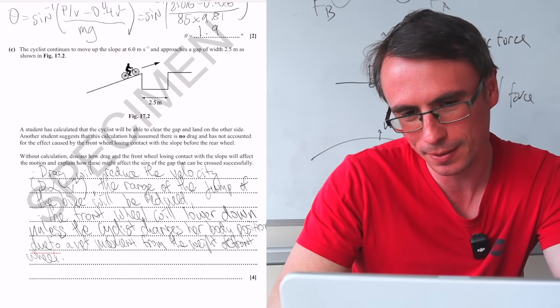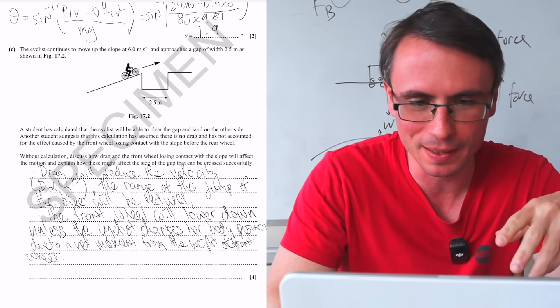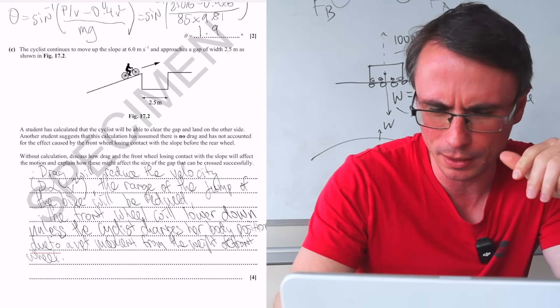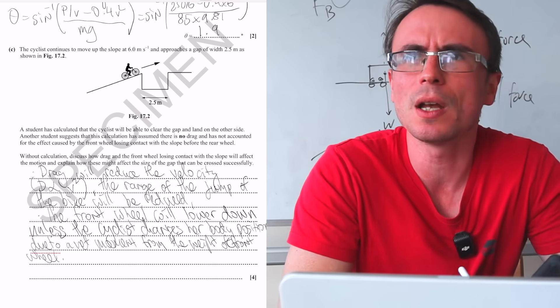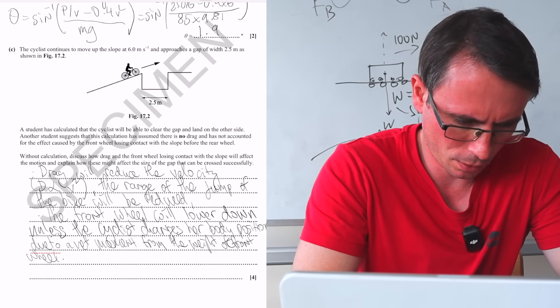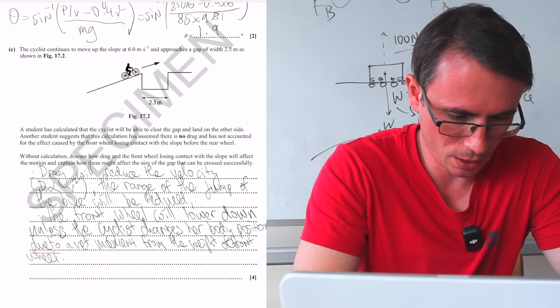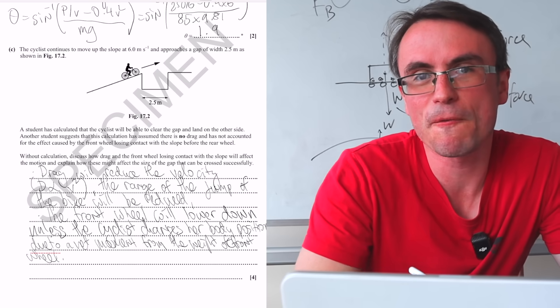But if the speed is, let's say it's even 6 meters per second, and it's at an angle of 1.9 degrees, so 6 cosine of 1.9, that's a speed of 5.9, which is virtually 6 along the slope.